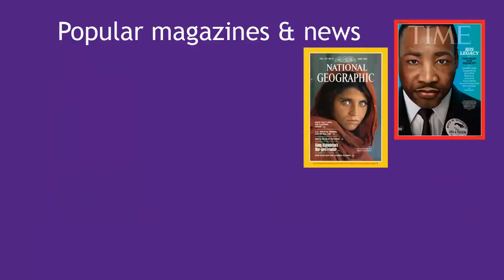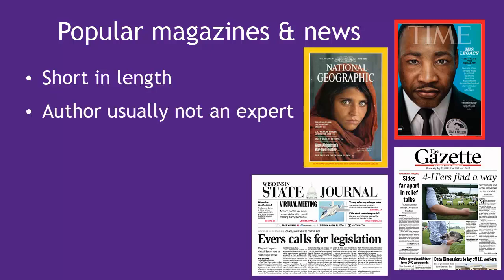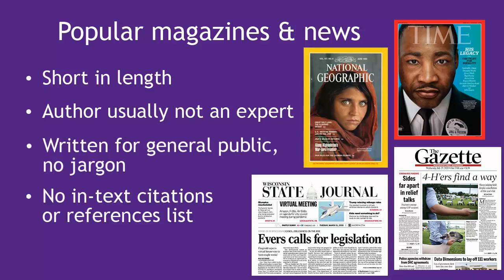Popular sources such as magazine and newspaper articles are usually fairly short. You won't always find the name of the author listed, and the author of the article is not necessarily an expert on the topic being discussed — they're most often journalists. Articles are written for the general public and don't contain a lot of technical language. You also won't find a list of citations at the end of these articles.